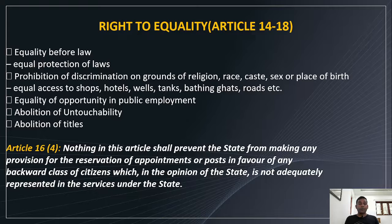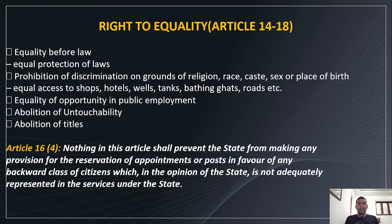Article 15 is the prohibition of discrimination on the grounds of religion, race, caste, sex, or place of birth, and ensures equal access to shops, hotels, wells, tanks, bathing ghats, and roads. There must be no discrimination. This applies to public places — not private places. We can only enjoy these rights in public places.